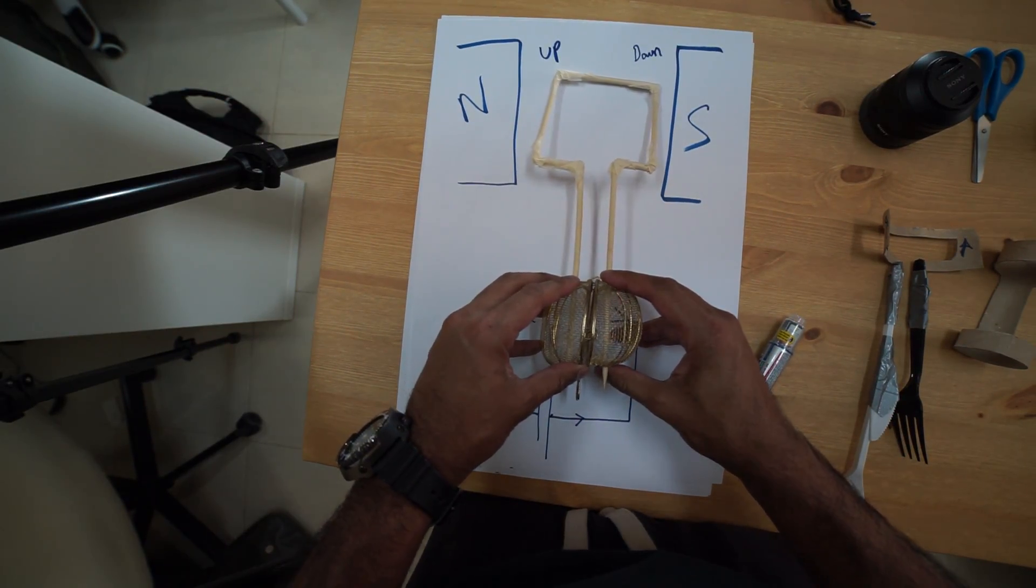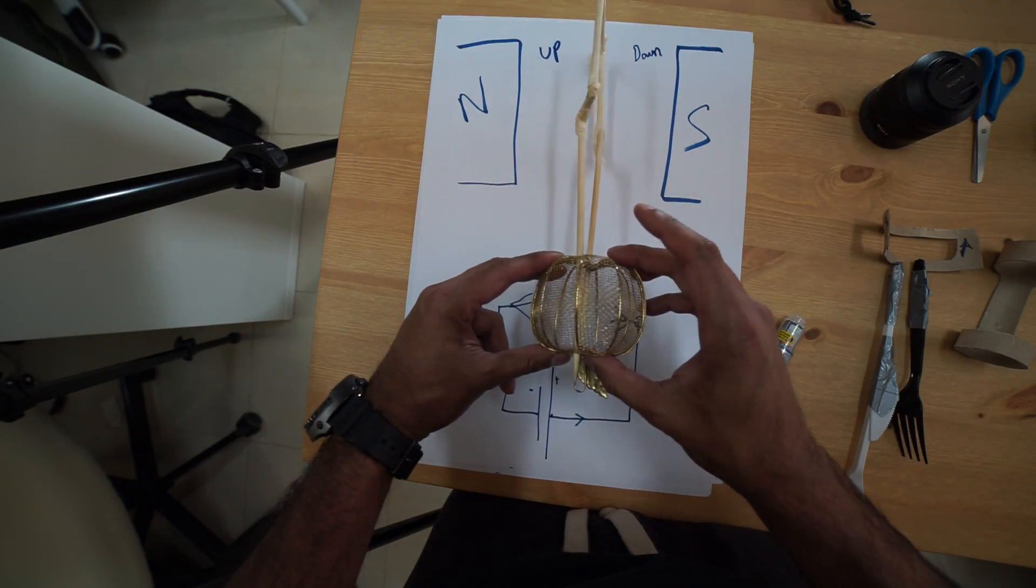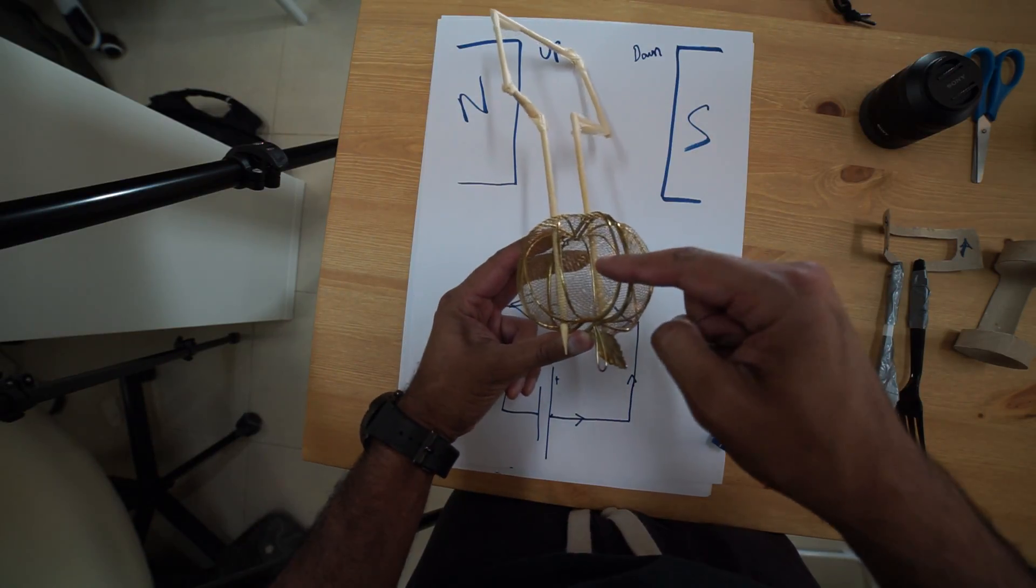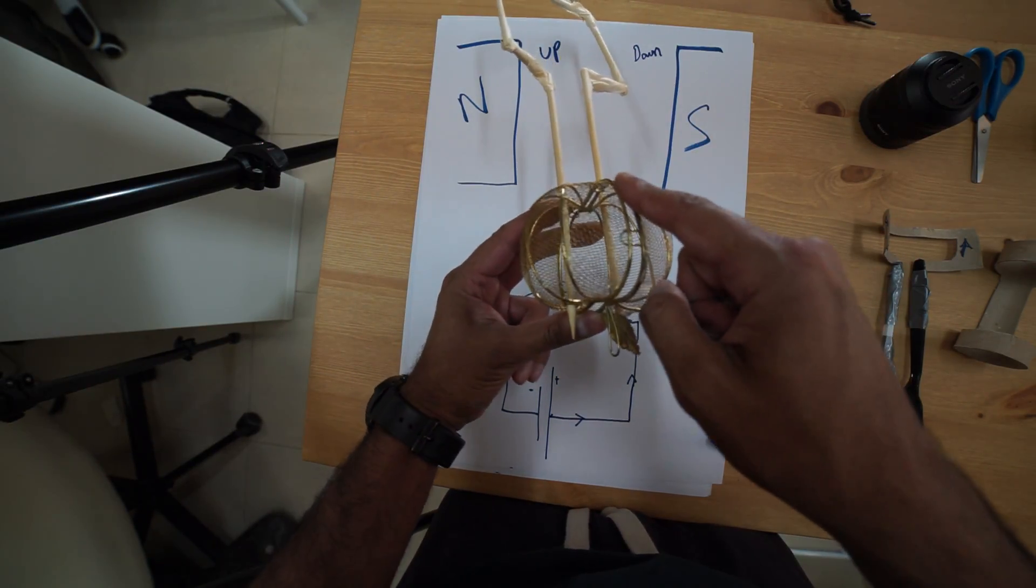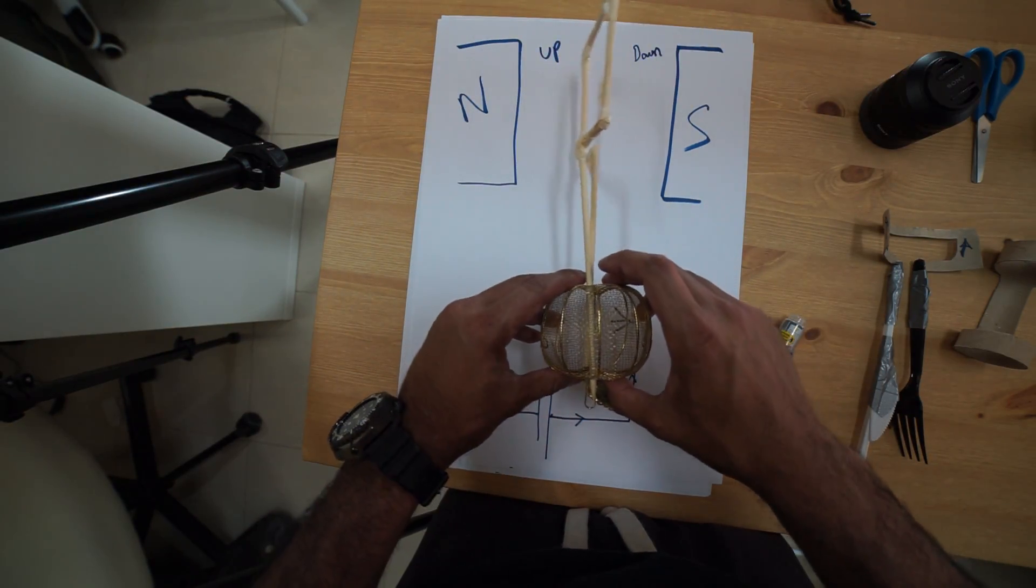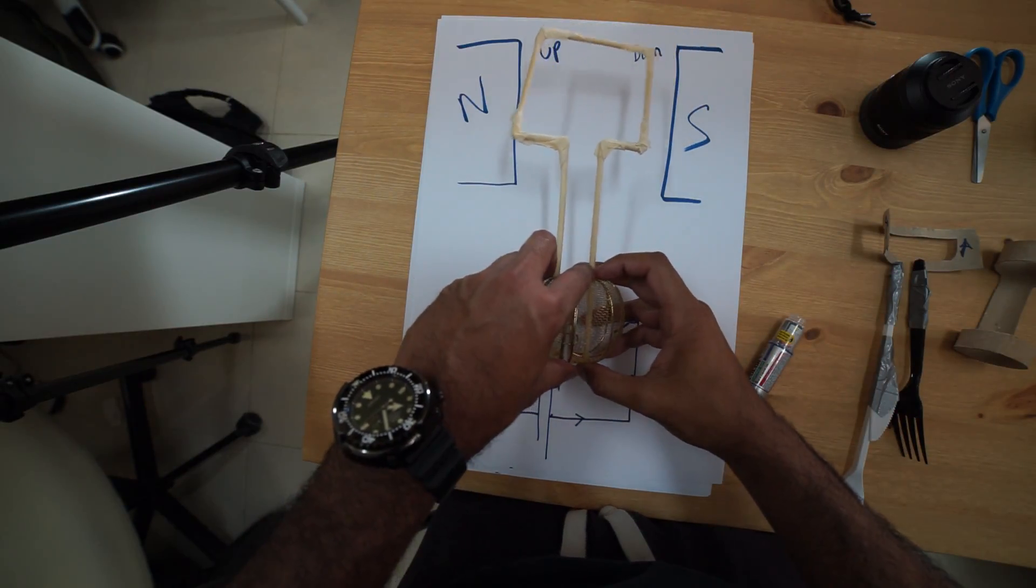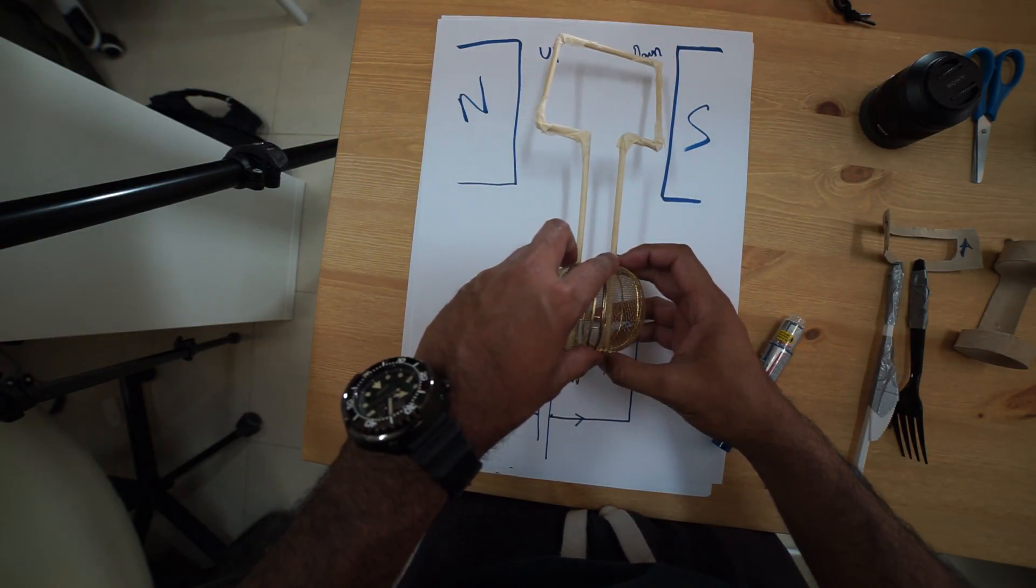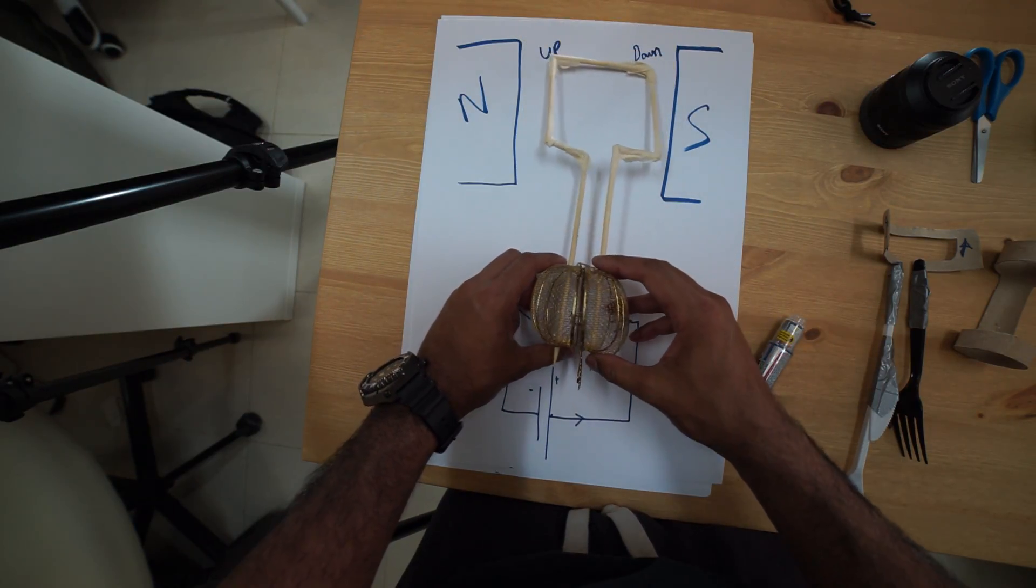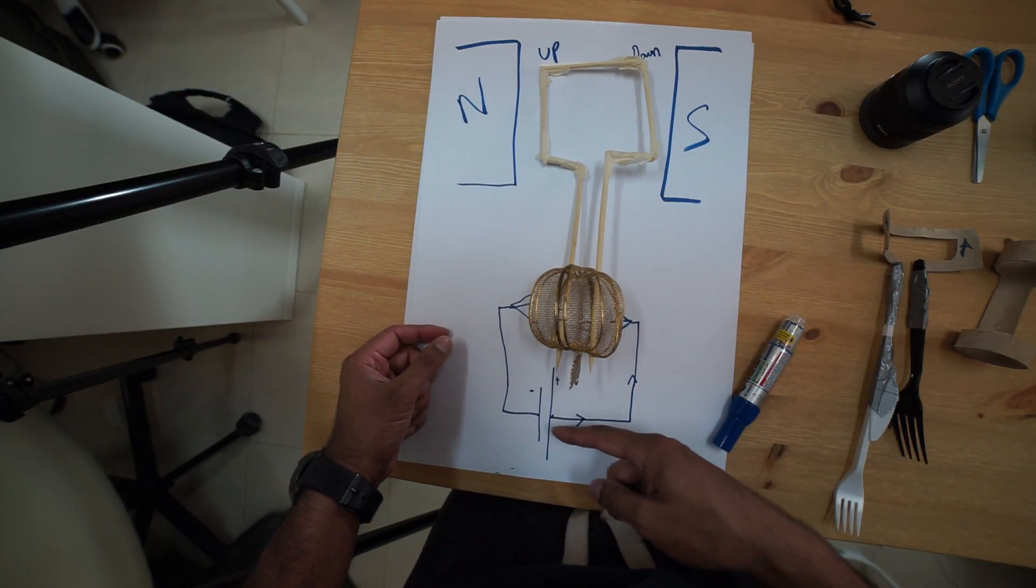So what happens is it turns like this, and when it's at this point, what's happening is the brush here is on the gap. So what happens is the circuit essentially switches off, but because of the momentum of the wire, it spins back around like this back to its original position.